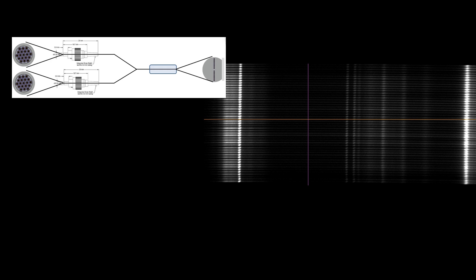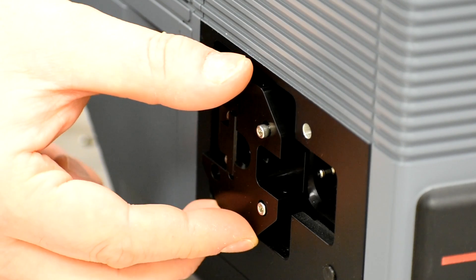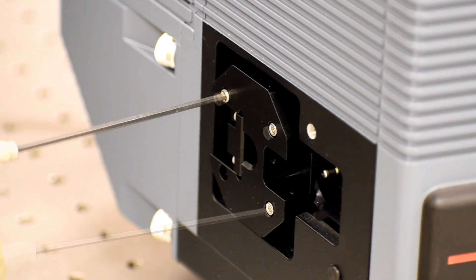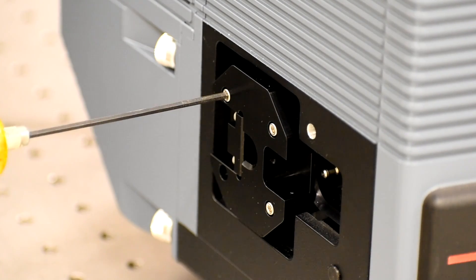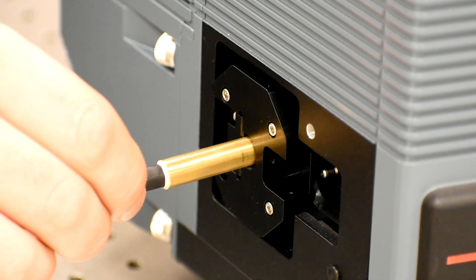For example, use bundles with multiple inputs for simultaneous multi-channel data acquisitions. For setup, simply connect the fiber bundle adapter to the entrance slit and insert the fiber. It is designed to automatically align to the entrance slit of the spectrograph.